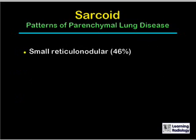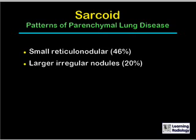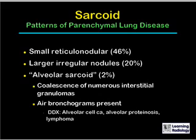Patterns of parenchymal lung disease in sarcoid include, most commonly, a small reticular nodular pattern diffusely throughout the lungs. Sometimes there can be larger irregular nodules — the so-called acinar pattern. Even less commonly, there can be a pattern called alveolar sarcoid, which represents a coalescence of innumerable small interstitial granulomas. It is not in fact alveolar; the disease is interstitial. There may be air bronchograms present, and the differential diagnosis might include alveolar cell carcinoma, alveolar proteinosis, and lymphoma.